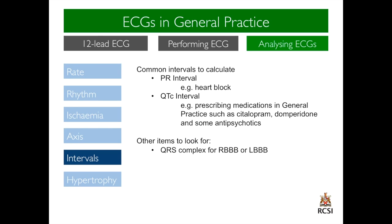Moving on to intervals. The first common interval calculated in general practice is the PR interval. It is very important in a bradycardia to calculate the PR interval to outrule 1st, 2nd or 3rd degree heart block. Another common interval calculated, particularly in terms of drug monitoring, is the QTc interval. This is important in terms of prescribing medications such as citalopram, domperidone and some antipsychotics. Other items and intervals to look out for include analysis of the QRS complex, for example with right bundle or left bundle branch block.